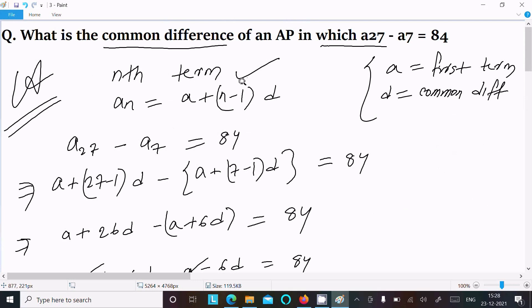Write the nth term formula where a is the first term and d is the common difference. Write the given a27 minus a7, and put the values on the basis of this formula. So an value is now here 27, 27 minus 1 into d, minus a where this n is now 7, 7 minus 1 into d.